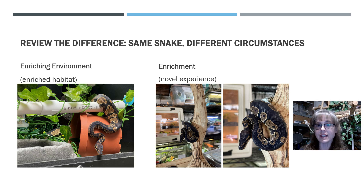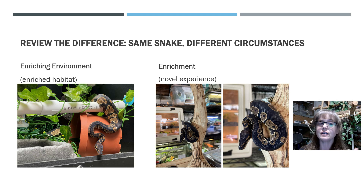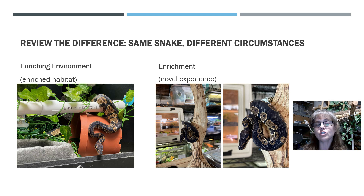Let's review the difference. This is the same snake, but different circumstances. The photo on the left is the photo of the snake in her enriched environment. She has a very enriched, environmentally stimulating, environmentally complex habitat. She has climbing opportunities and different levels. She has substrate, a water dish that's big enough to get into and textured on the outside. She's got a planter in there, a humid hide with damp sphagnum moss, a cave hide, and another hide. Those things all remain the same. She's got more than one perch and a real branch. Those all remain the same, so she can choose to use those different things whenever she likes and move around her habitat making choices as to where she spends time when.